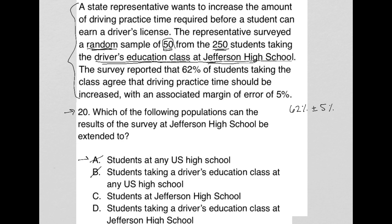Choice C says 'students at Jefferson High School.' That's closer, because now we're focusing only on Jefferson High School. But these students surveyed were taking a specific class, so other students at Jefferson of the same age who may not have wanted to take that class could have different thoughts. So choice C is eliminated as well.